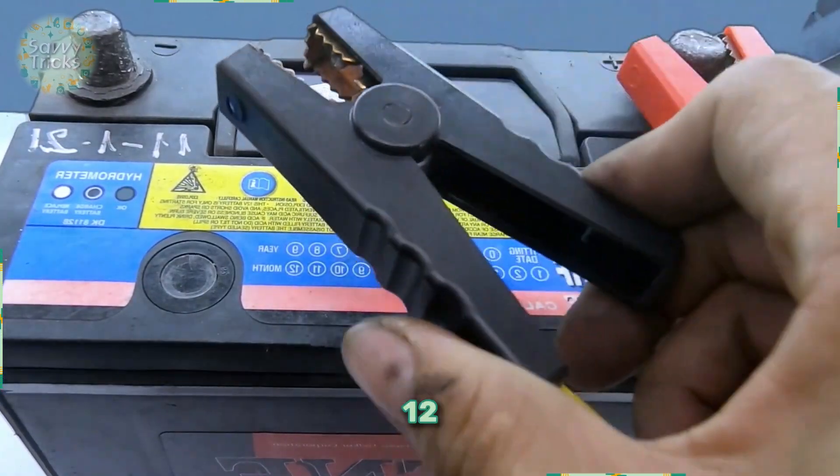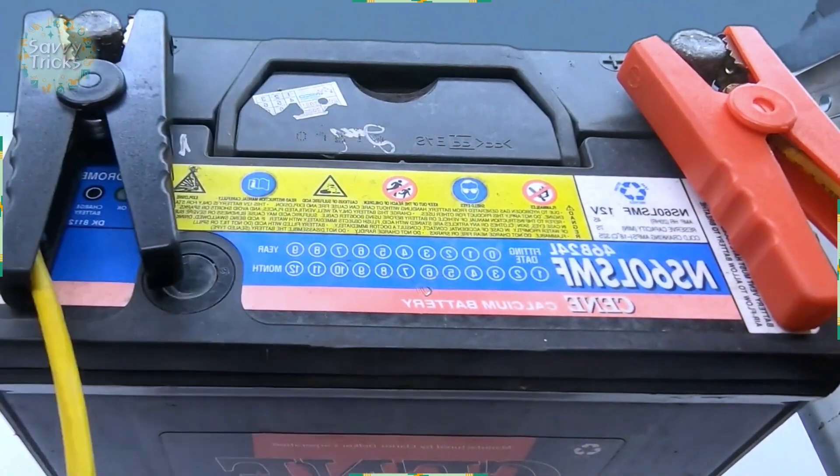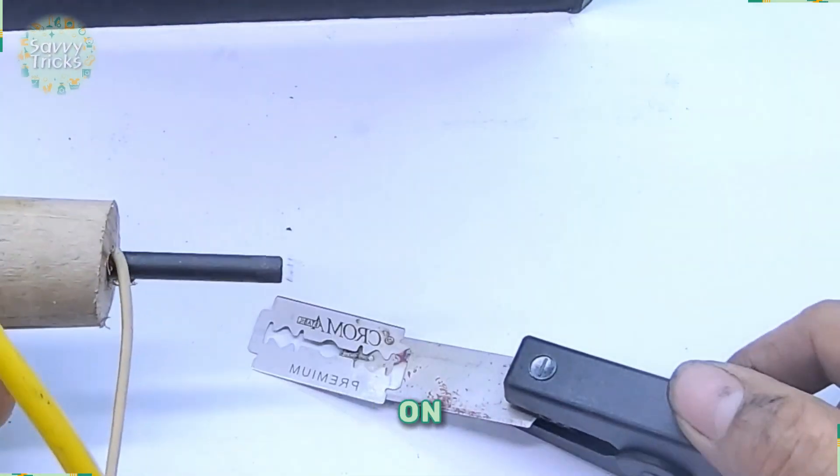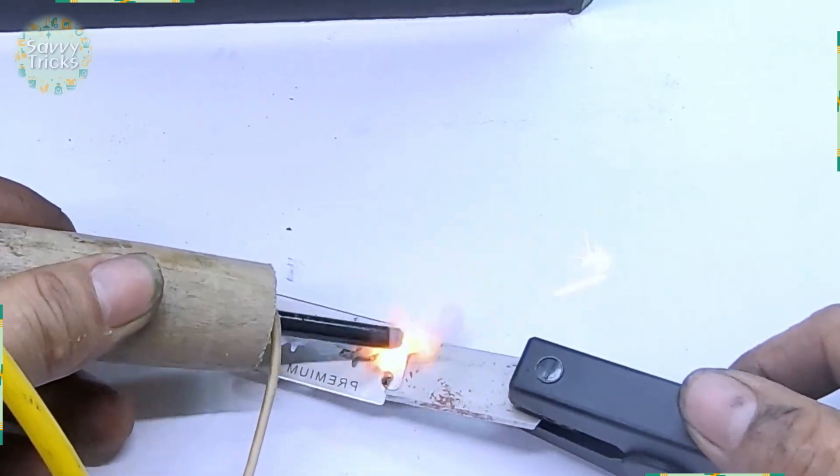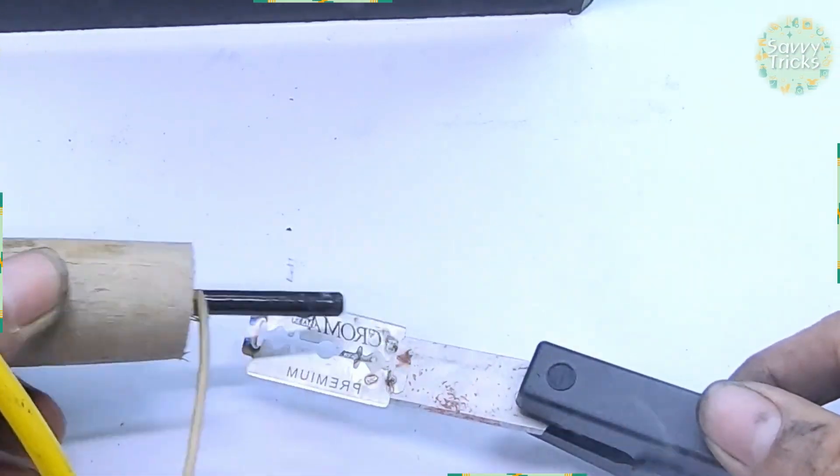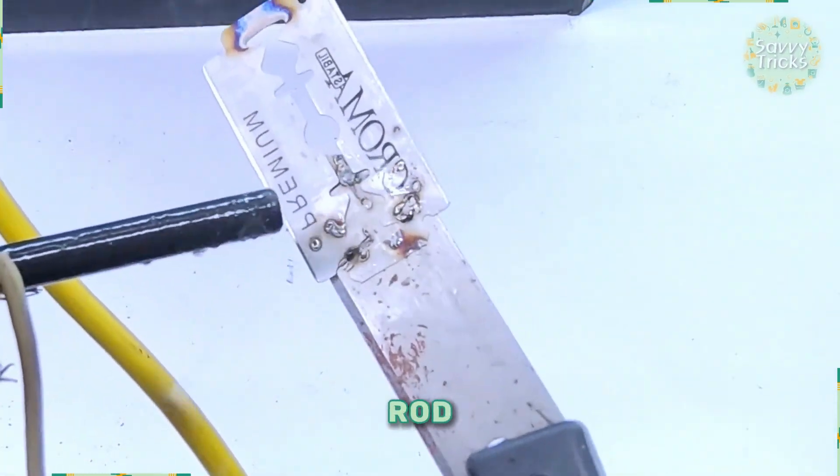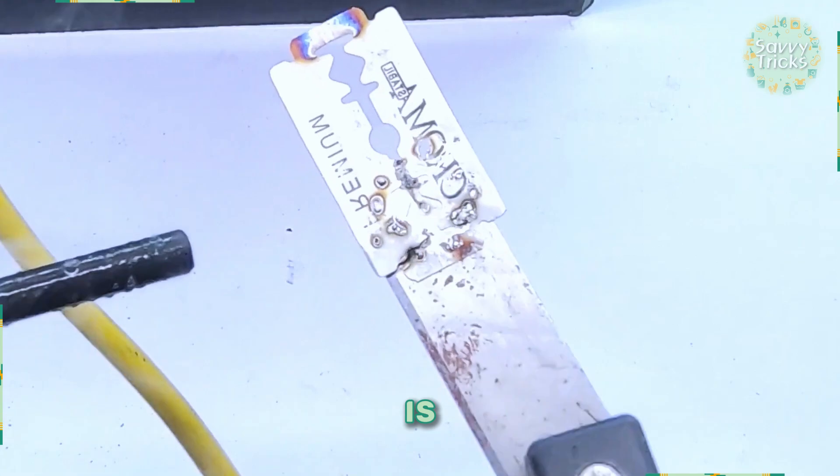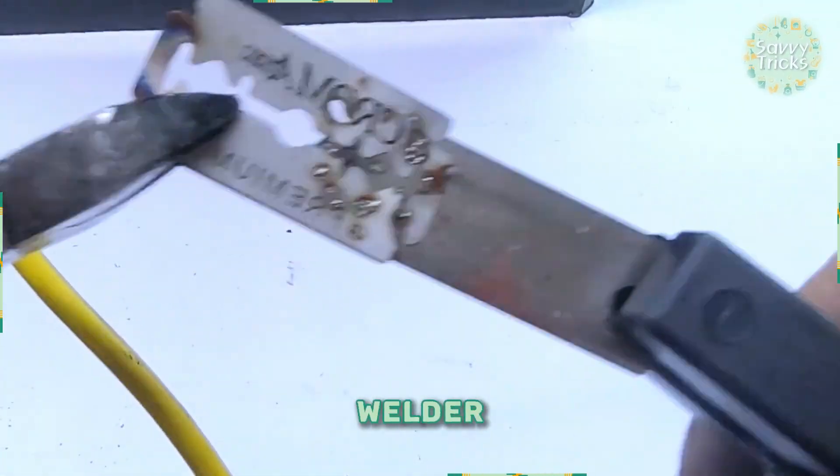Now take a 12 volt battery and attach clips to it. Attach the negative clip to one piece of metal and place another piece on it. Now we'll test this welding machine. Then connect the wire to the positive side and touch the rod to different points to test. See how strong the weld is. Our DIY welder is working well.